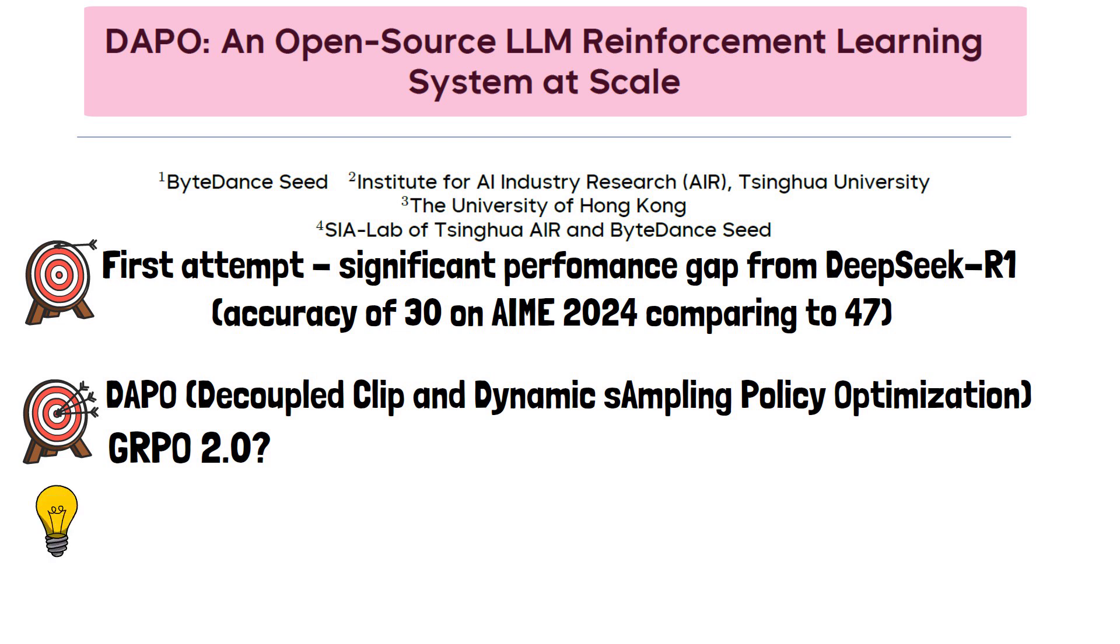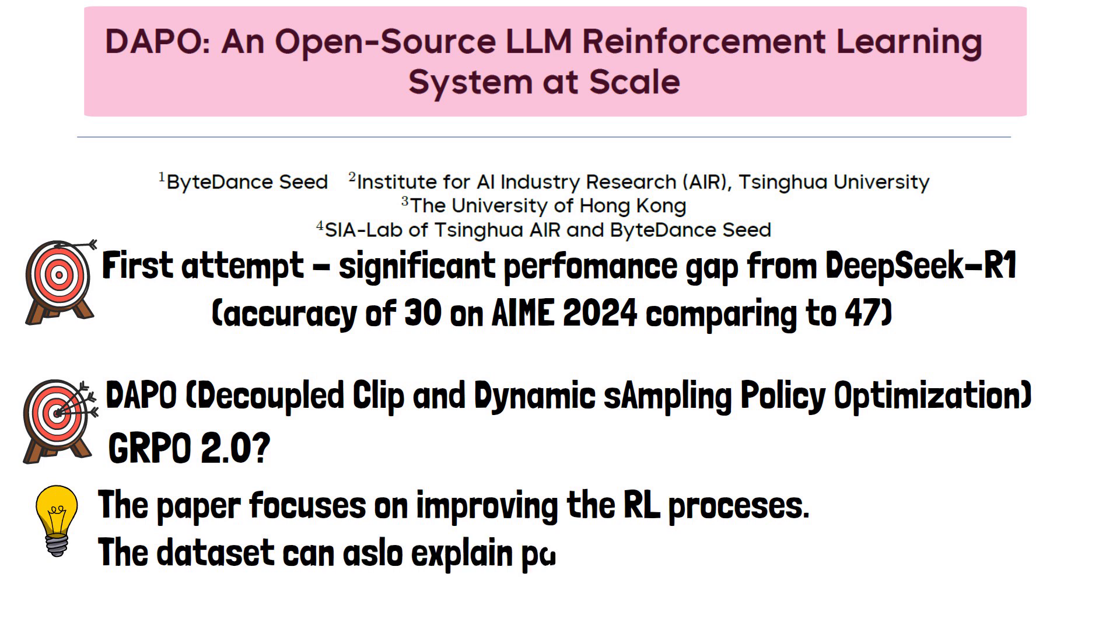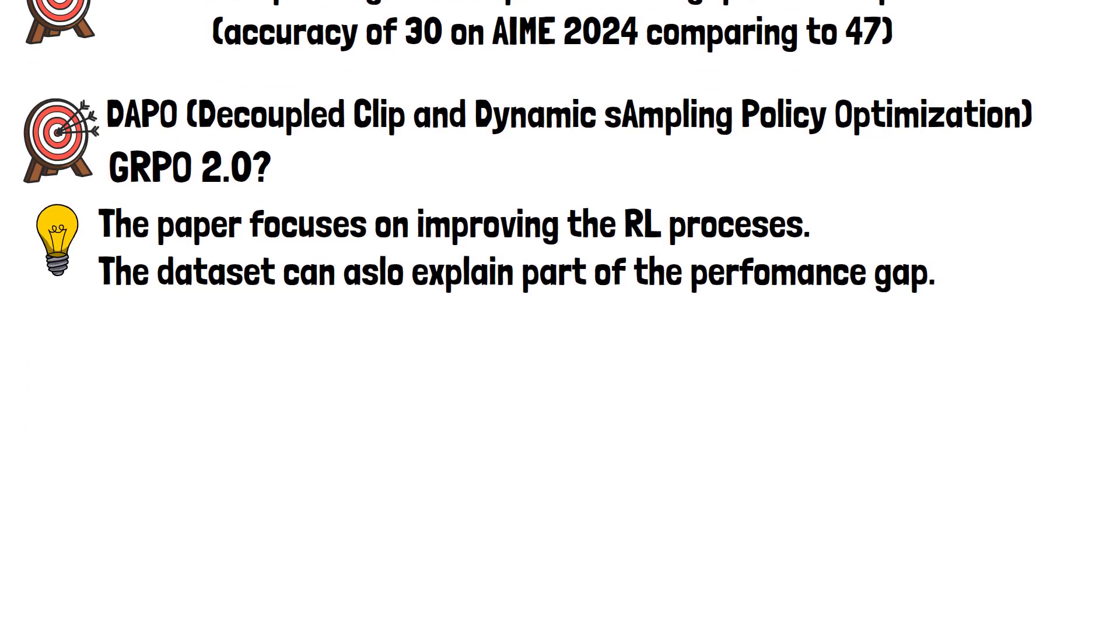But before diving in, it's important to note that while the performance gap could be attributed to the reinforcement learning process, another potential factor is the use of different datasets for training. The researchers created a new dataset, which may differ in structure or content from the dataset used by DeepSeek R1. However, the focus of the paper remains on improving the reinforcement learning algorithm and training process. Nevertheless, the findings are very interesting.